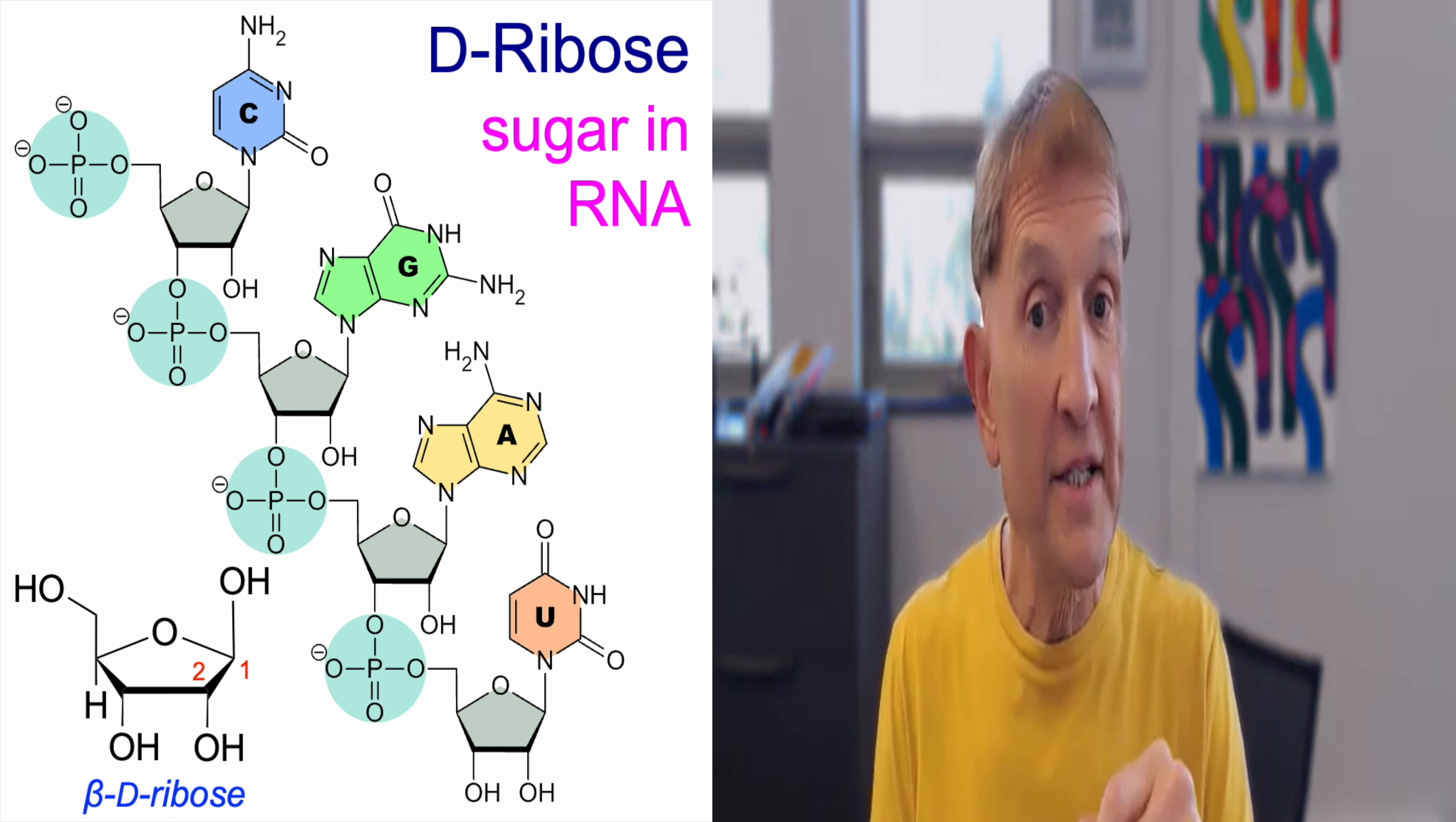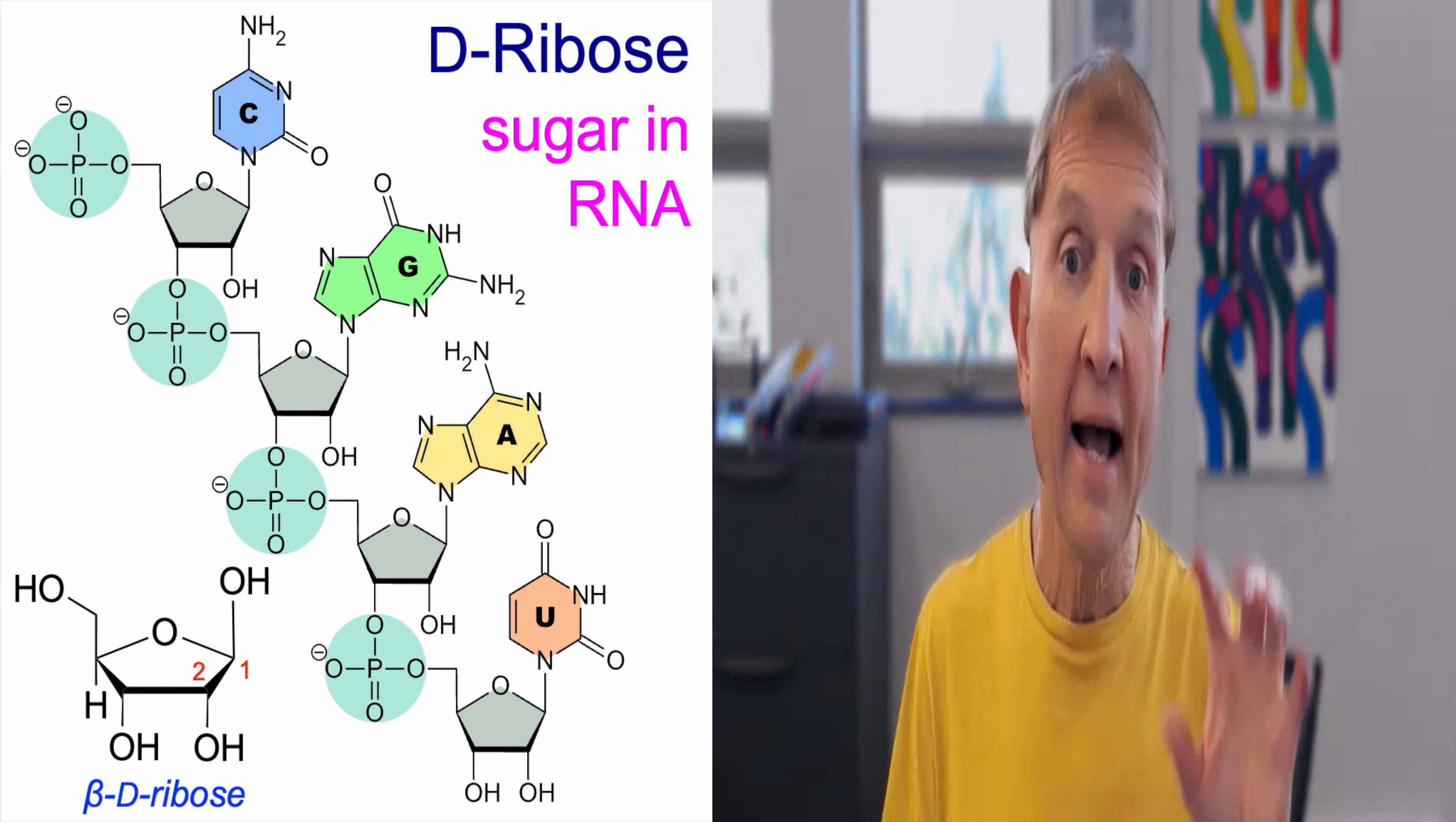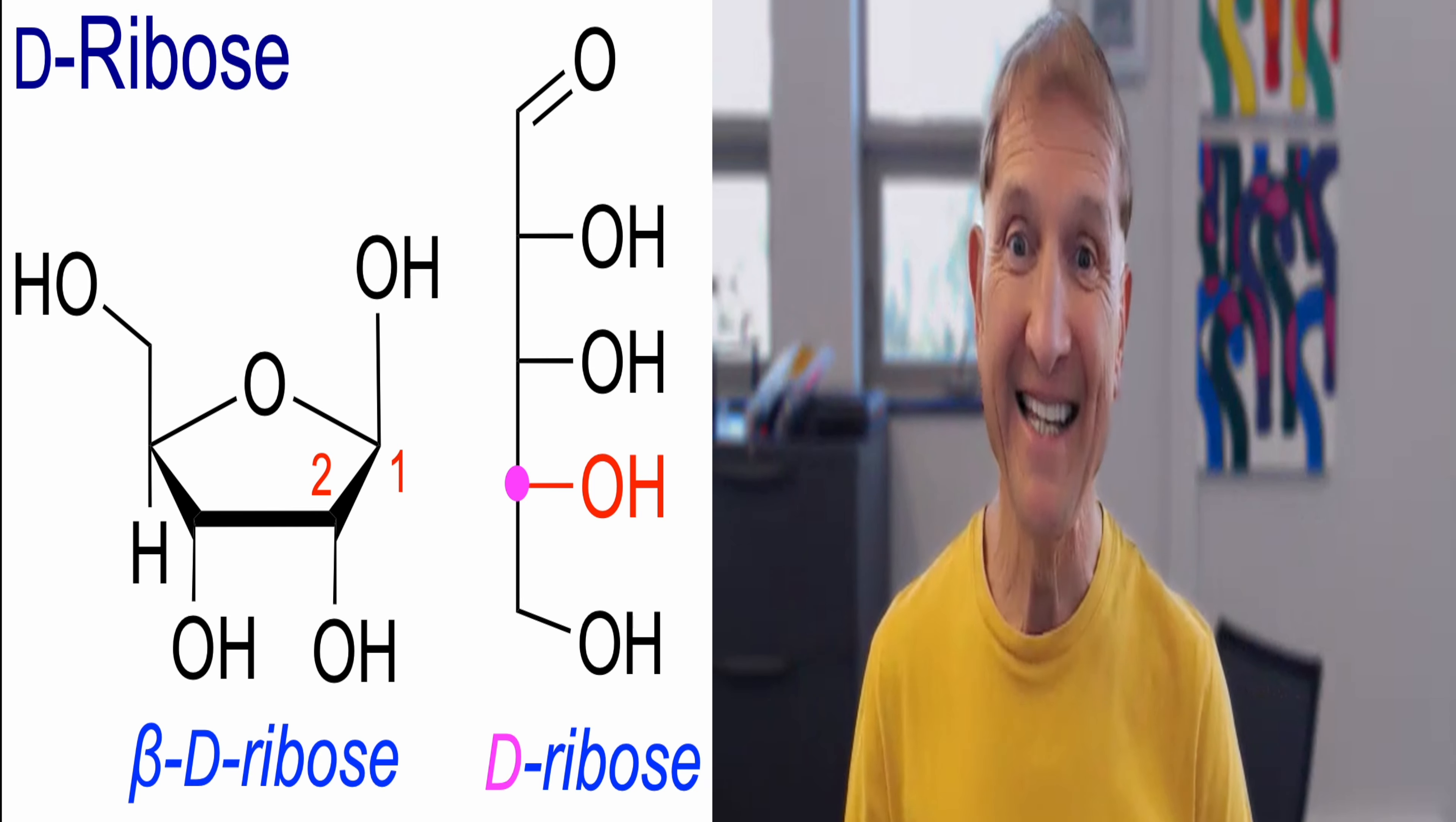RNA is connected by phosphates on the 3 prime position. But you see these sugars repeating over and over again and only the bases vary. So another way to draw D-ribose is as a Fischer projection. And DOH is pointing on the right. It's a D sugar.